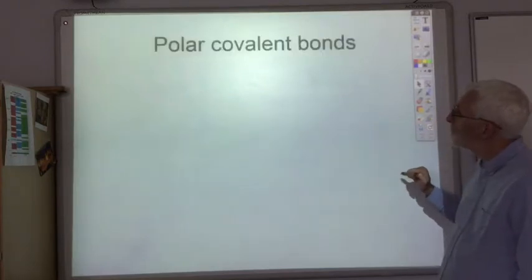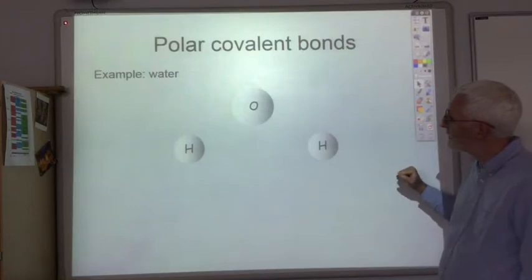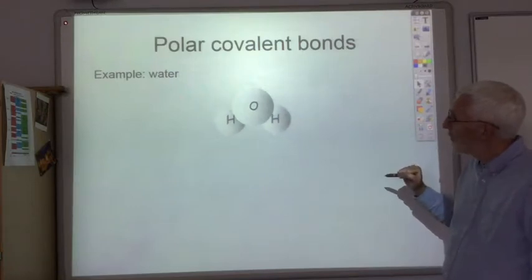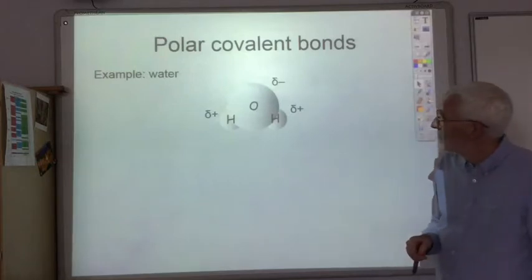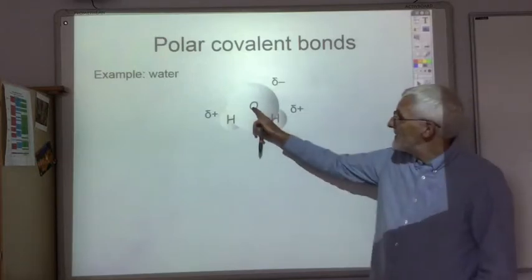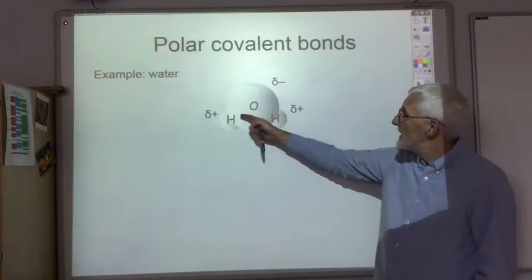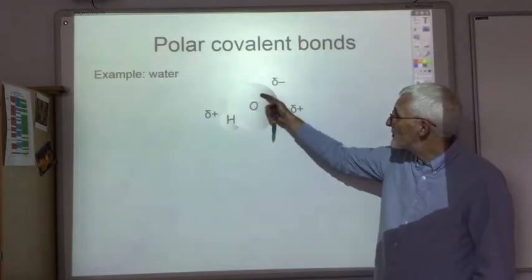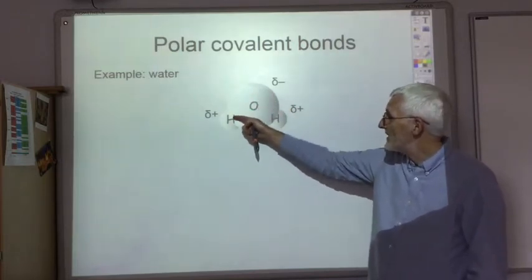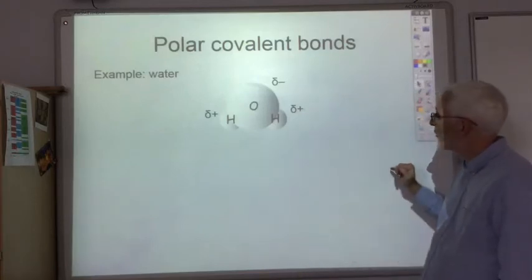If you had a polar covalent bond — for example, as you would in water — the oxygen being more electronegative than the hydrogen, what we find is that the individual molecular orbitals are not symmetrical, because the electrons will spend more time near the oxygen atom than the hydrogen atom. So we get non-symmetrical molecular orbitals.